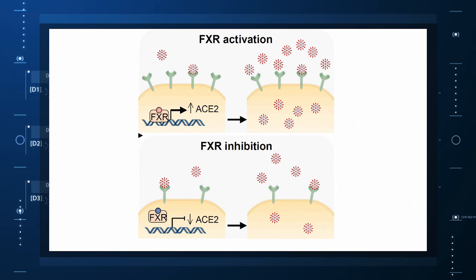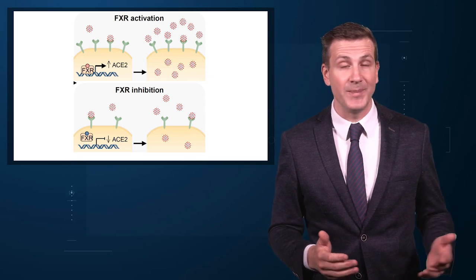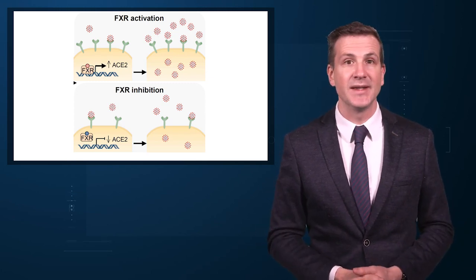The authors first showed that ACE2 expression is controlled by a certain transcription factor known as the Farnesoid X receptor, or FXR. Reducing the binding of FXR should therefore reduce ACE2 expression. And as luck would have it, UDCA reduces the levels of FXR, and thus the expression of ACE2 in cells.